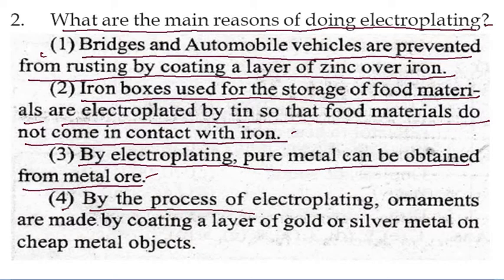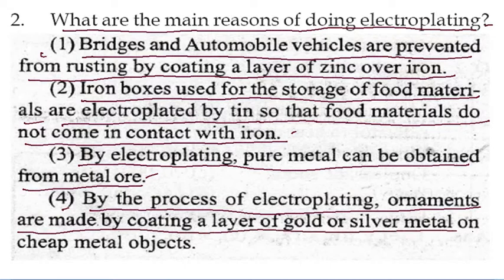Fourth, by the process of electroplating, ornaments are made by coating a layer of gold or silver metal on cheap metal objects. For inexpensive items, silver or gold polish is applied through electroplating.